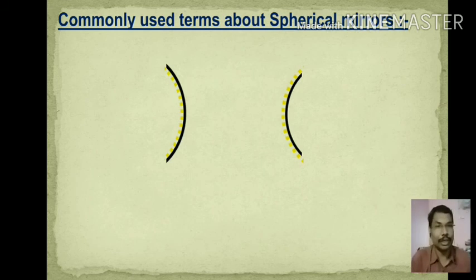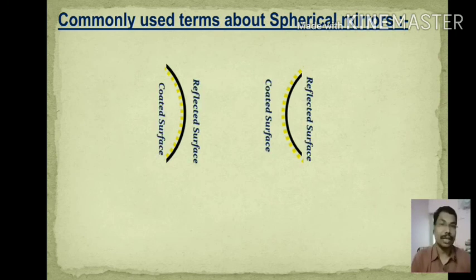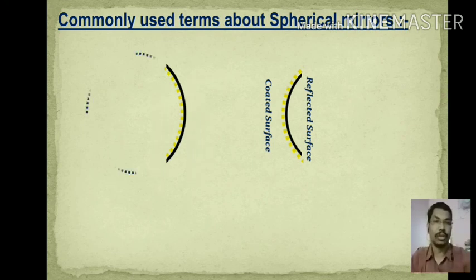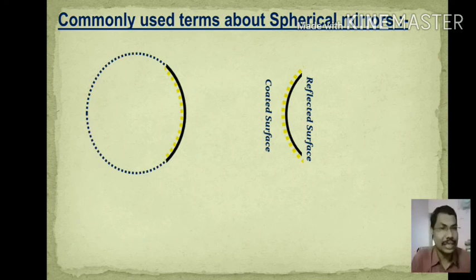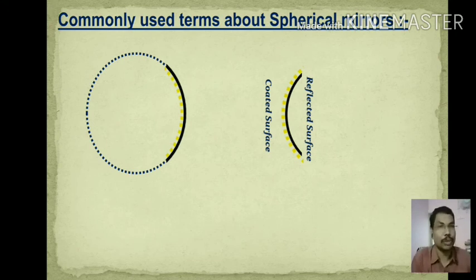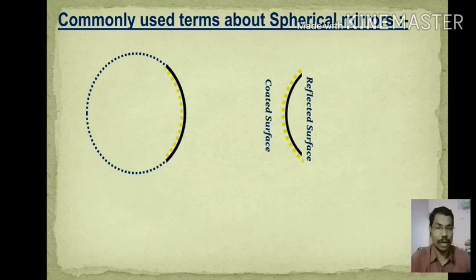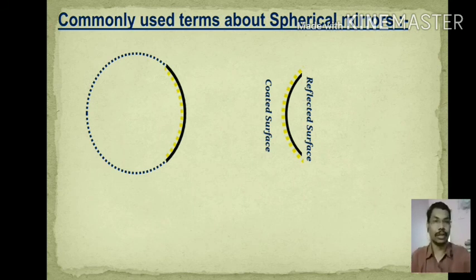Now let us look at the formally used terms about spherical mirrors. Curved mirrors are simply a part of a sphere — that is why they are called spherical mirrors. When visualized in two dimensions it is a part of a circle, and when it is cut from a sphere, it becomes our curved mirror.